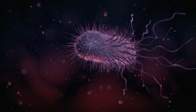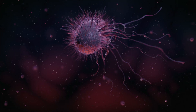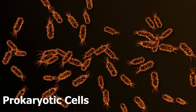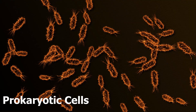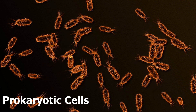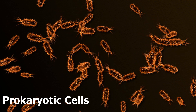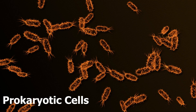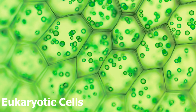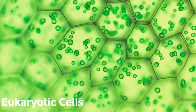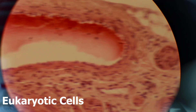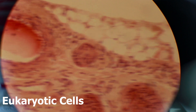There are many types of cells, each with their own unique structure and function. The two main types include prokaryotic cells. These are simple cells without a nucleus, like bacteria. Eukaryotic cells are more complex cells with a nucleus, like the ones in plants and animals.